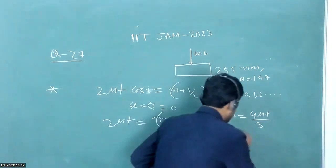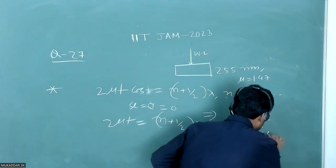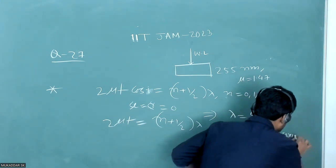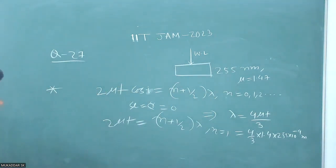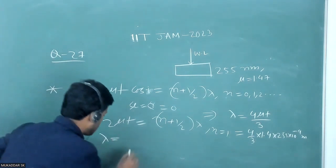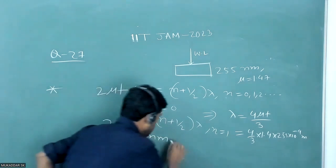If I substitute the values, we will have 4/3 × μ (1.47) × T (255 nanometer). Calculating this value, lambda will come around 500 nanometer, and that is basically green.